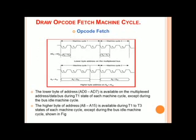To draw a complete machine cycle, we first need to understand how the address bus behaves in different T-states. The lower bits of the address, A0 to A7, are available on the multiplexed address/data bus during T1 of each machine cycle, and the rest of the T-states are idle — so after T1, like T2, T3, and T4, it may be used as a data bus. For the higher address bits, A8 to A15, they are available during T1 to T3 of each machine cycle, except during the bus idle machine cycle.